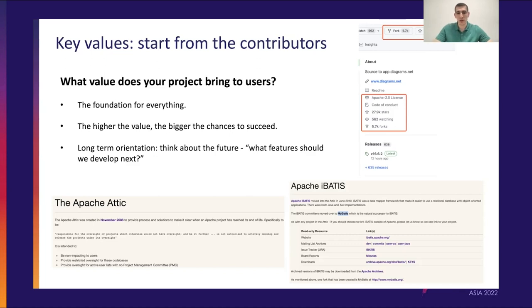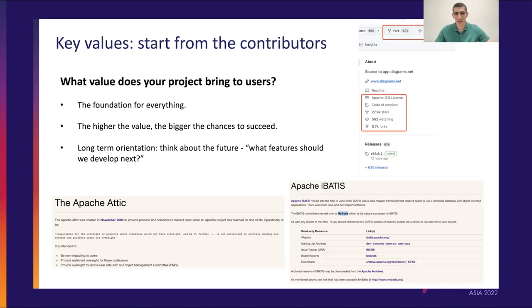Don't forget — if community contributors come to your project and start contributing, but then they do not see that they are building something useful, then they will lose that drive, that feeling of accomplishment they would get by seeing an enterprise applying or using an open source project they contribute to in a production environment. So you should really care about what value your project brings, and this will allow you to actually have a long-term orientation.